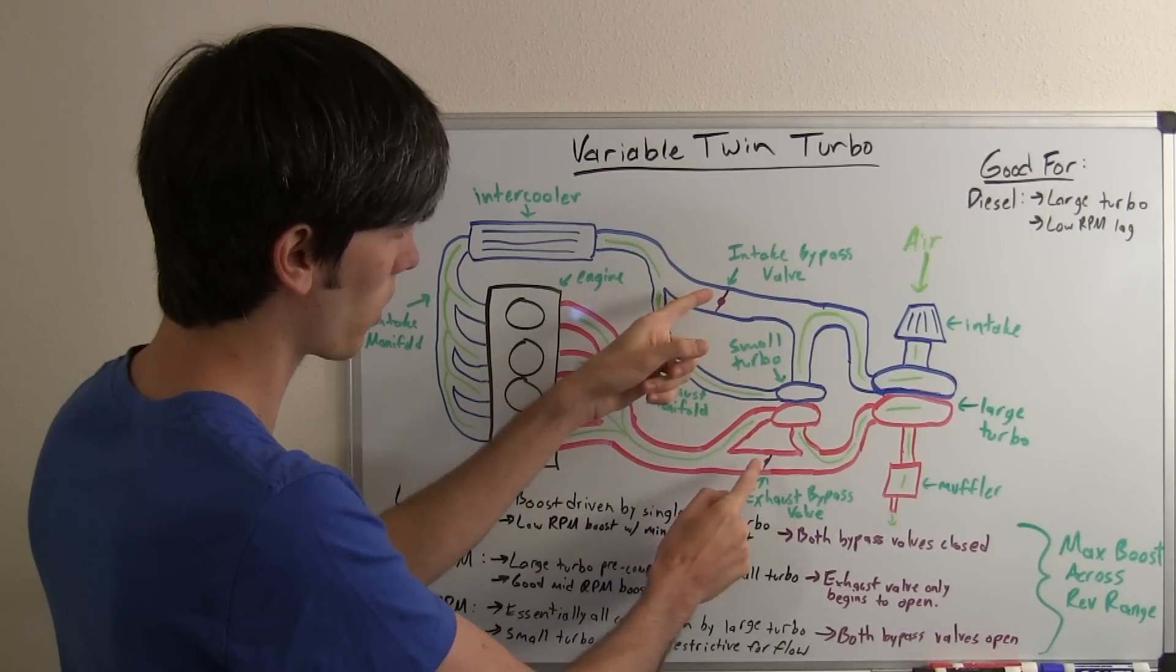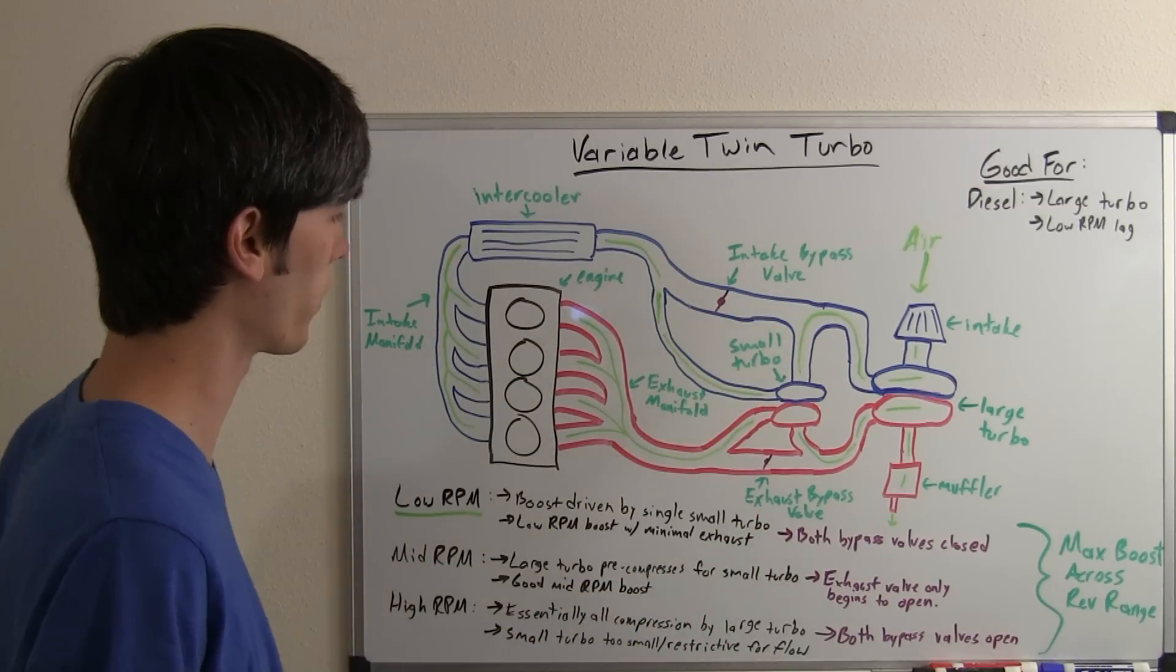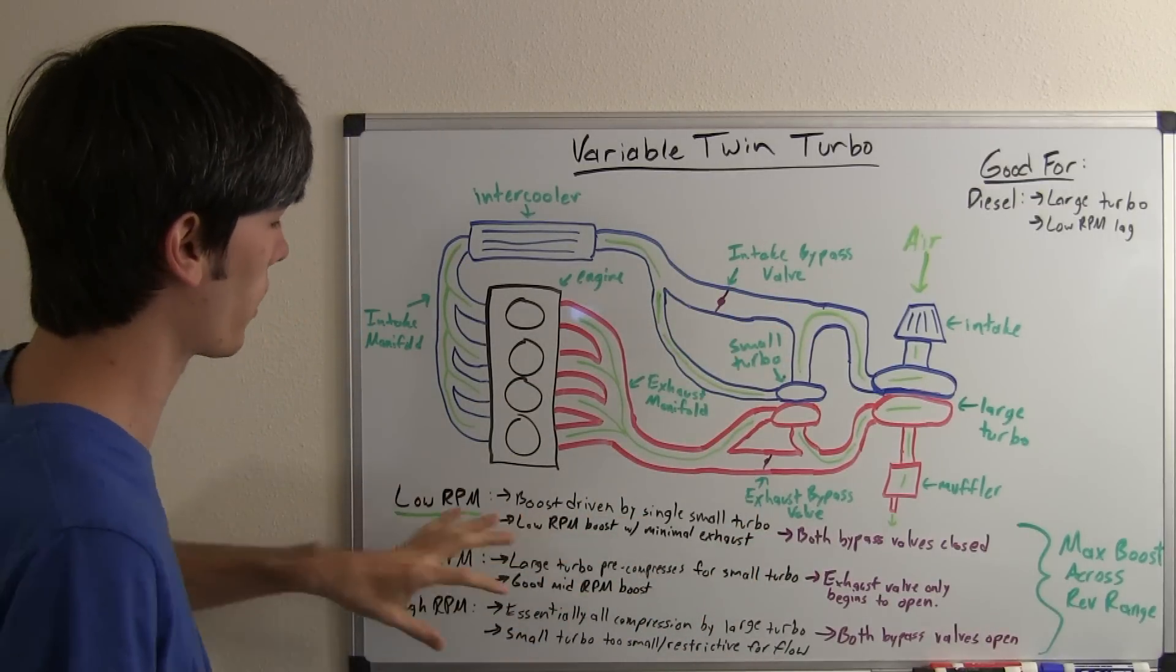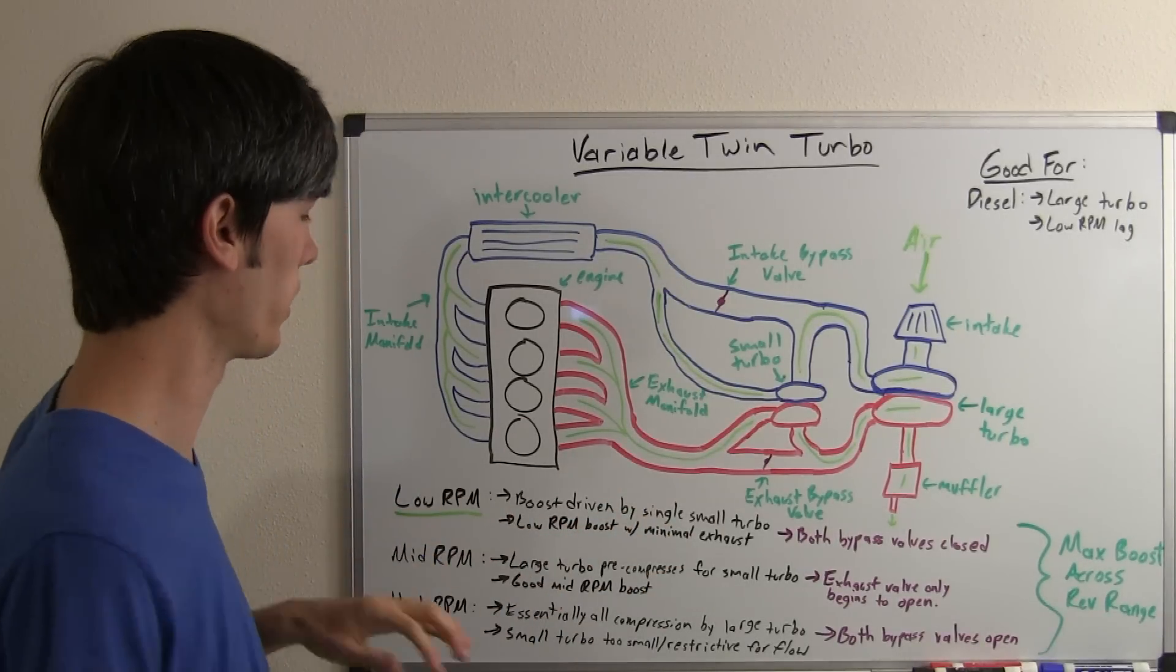Two critical things for this to work are these two bypass valves. We've got one for the intake and one for the exhaust. So we're just going to go through the low RPM, mid RPM, and high RPM and talk about what happens during each.